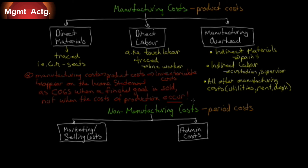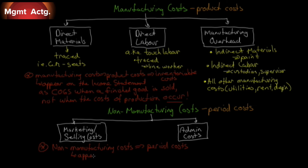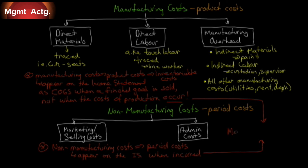When we look at non-manufacturing costs, on the other hand, these are period costs because they occur within a specific period of time. For example, in January we may have production costs with no sales — we wouldn't have any cost of goods sold — but we would still have a period cost for the CEO's salary. Period costs appear on the income statement when they are incurred, whereas production costs appear when the final good is sold. Both are consistent with the matching principle: we want to match our expenses with our revenues in the period in which they're incurred. So if we sell something in March, we want the cost of goods sold reflected in March, not in January when it was produced.